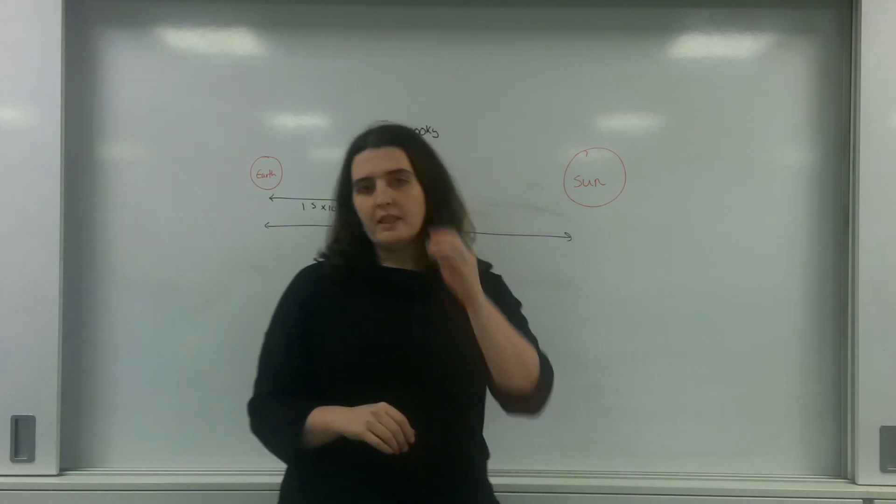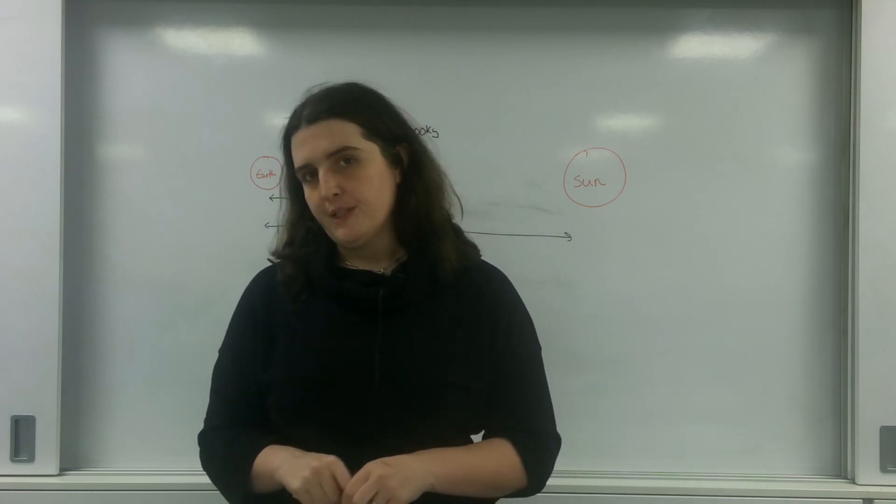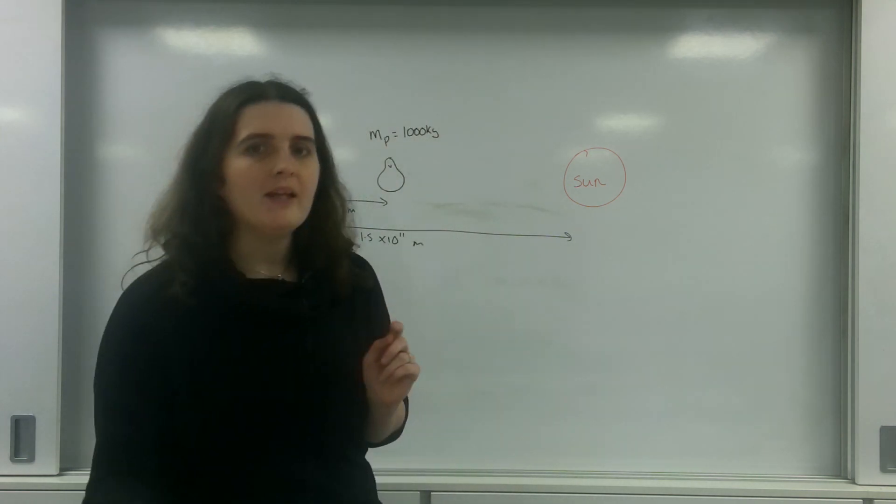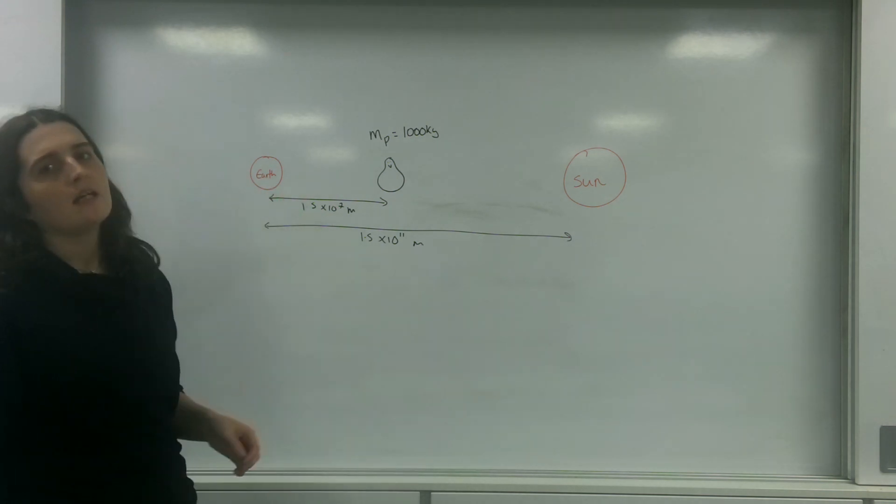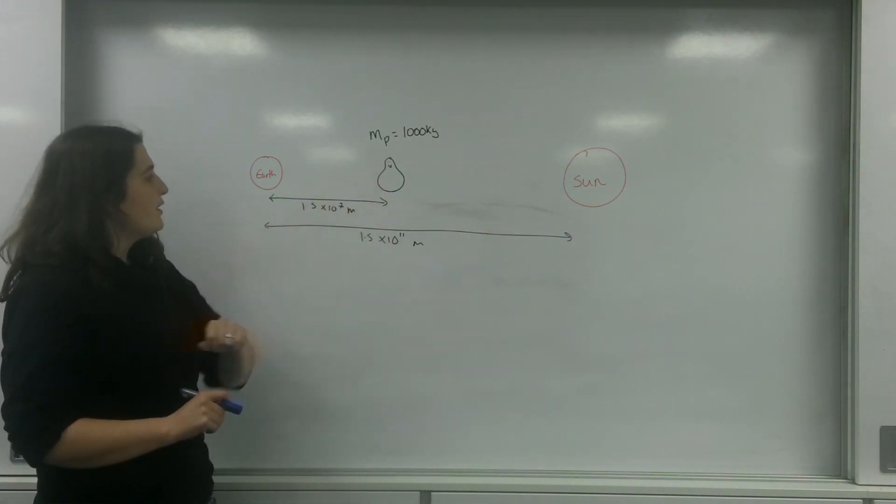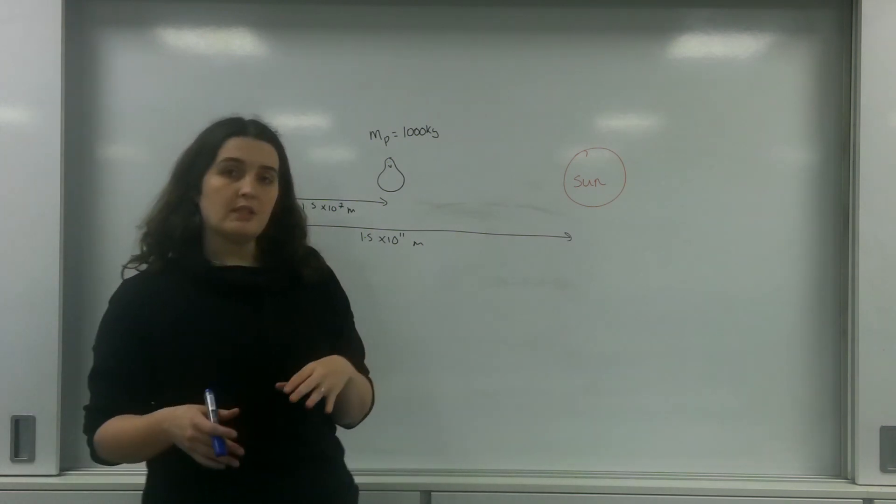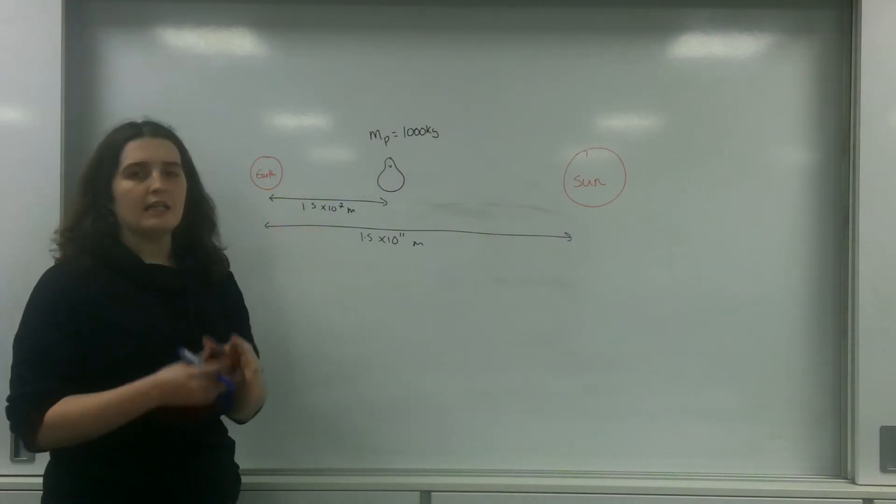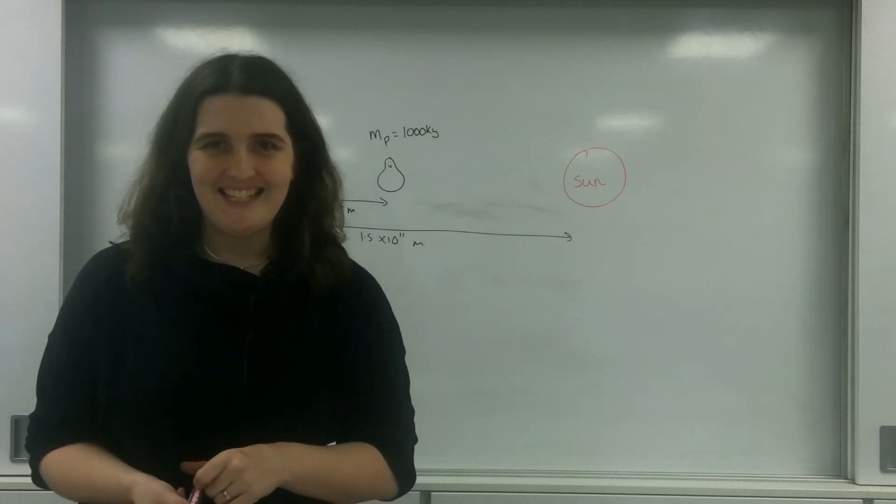Good evening and welcome to TR Physics. Today I'm going to talk about resultant gravitational forces. I have my penguin and he is in space between the Earth and the Sun. This penguin is 1.5 times 10 to the 7 meters from Earth, and the total distance between the Earth and the Sun is 1 astronomical unit or 1.5 times 10 to the 11 meters.